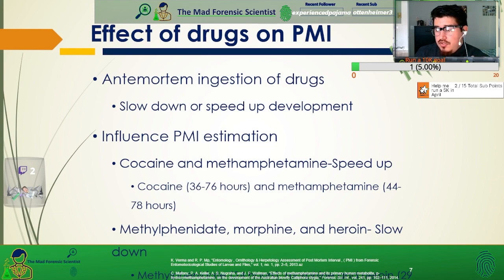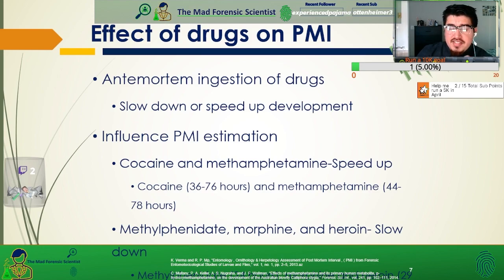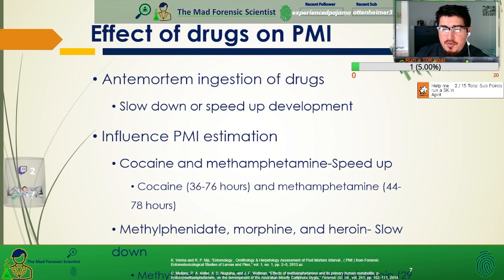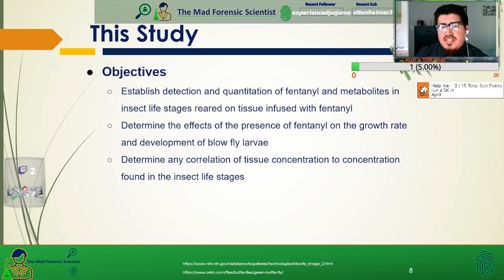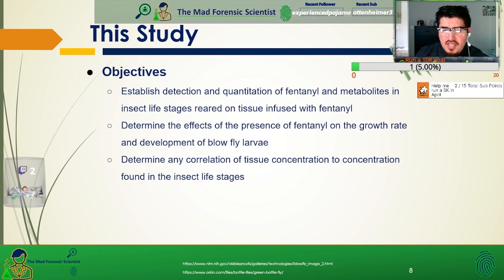Drugs have been shown to affect this growth rate — drugs in a body can either speed up or slow down development, which can influence post-mortem interval estimation. Cocaine and methamphetamine have been shown to speed up growth rates, with cocaine speeding it up by 36 to 76 hours and methamphetamine by 44 to 78 hours. Methamphetamine, morphine, and heroin have been shown to slow down the growth rate. The objective of this study was to establish detection and quantitation of fentanyl and metabolites in insect life stages reared on tissue fused with fentanyl, determine the effects of fentanyl on insect growth rate, and determine if there is any correlation between tissue concentration and the concentration found in the insects themselves.